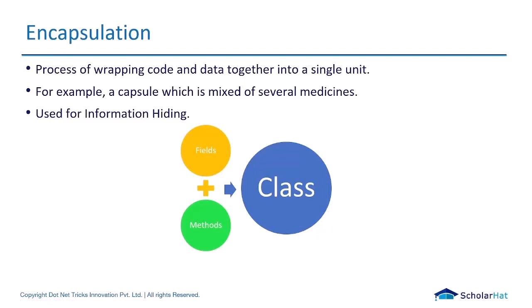Now we come to the end of the OOP concept: encapsulation. Encapsulation is the process of wrapping code together in a single unit. If I take a real life example — a company has several departments: production, HR, marketing, and developers. All these departments make up a company, so the company is like a capsule. It is basically used for information hiding as well.